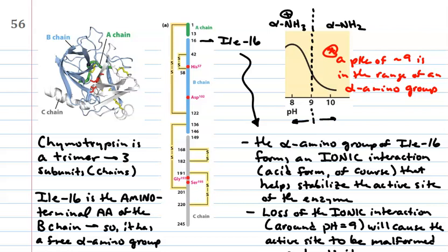Oh, so here's the story. Okay. You would have never been able to come up with this on your own, but I'm telling you the story now. Isoleucine-16 has this alpha amino group. It forms an ionic interaction. It can be in the acid form, right? And oh, it'll be in the acid form at what pH values? Probably below 9.